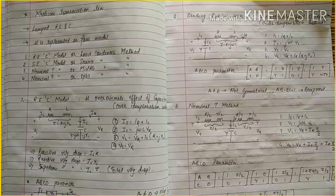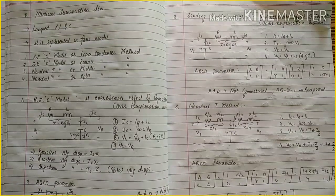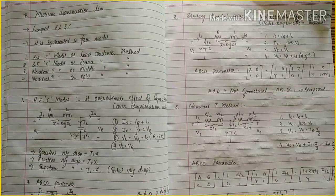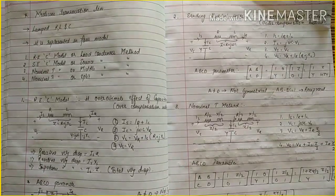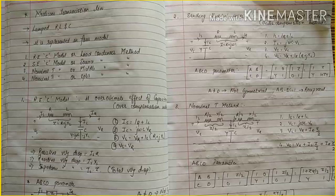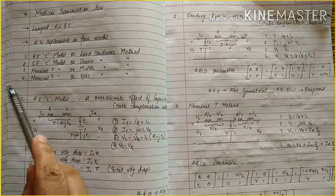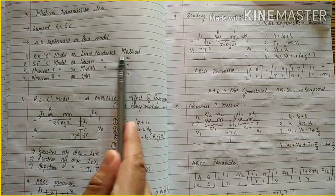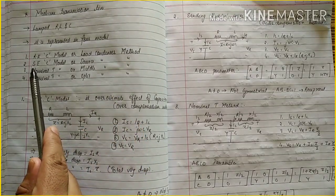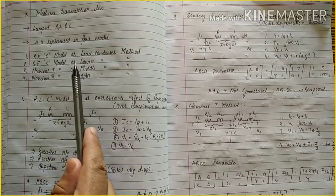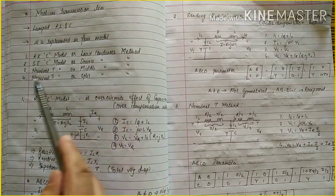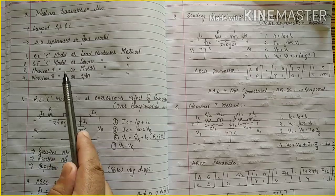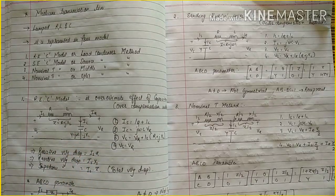Today we will see the analysis of medium transmission line. In medium transmission line we have a lumped RLC circuit, and it is represented in four types of model. First is receiving end capacitor model, or load condenser method. Second is sending end capacitor model, or source condenser method. Third is nominal T method, and fourth is nominal pi, or split condenser method.